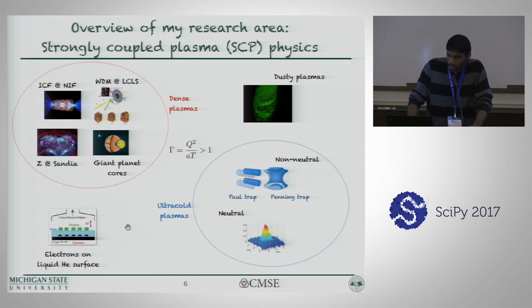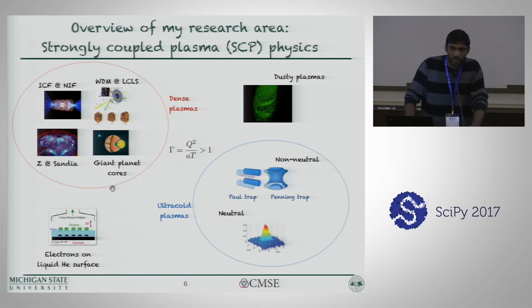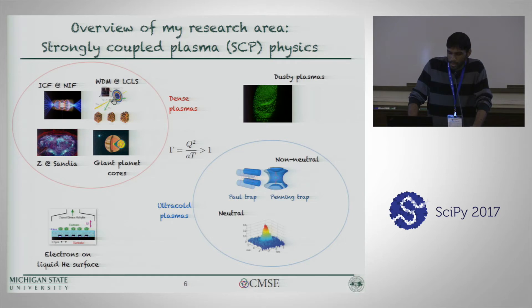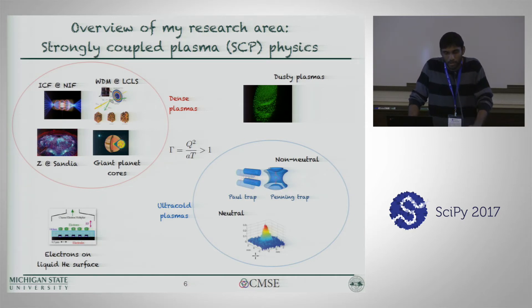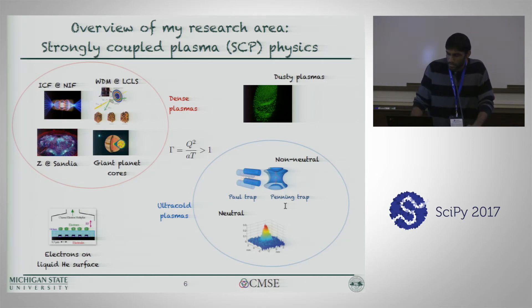These kinds of strongly coupled plasmas manifest themselves in different systems. There is one category of hot and dense plasmas, such as those found in the inertial confinement fusion process at the National Ignition Facility in Lawrence Livermore, or in warm dense matter experiments using the linear coherent light source, or the Z experiment at Sandia. More exotic strongly coupled plasmas are found in the interior of planetary cores. At the other extreme, there are the extremely cold and dilute ultra-cold plasmas, of two kinds: neutral and non-neutral. The neutral category is created from ultra-cold gases at micro-Kelvin or nano-Kelvin temperatures, and the non-neutral category consists of ions trapped in traps like Paul or Penning traps.